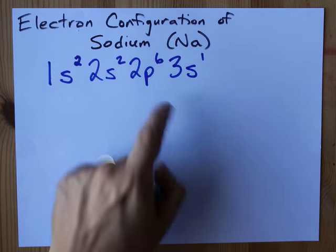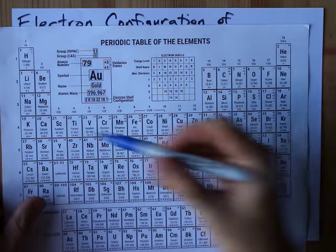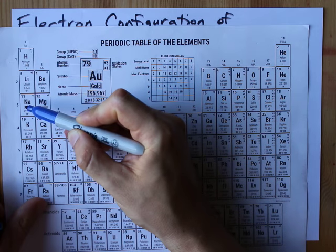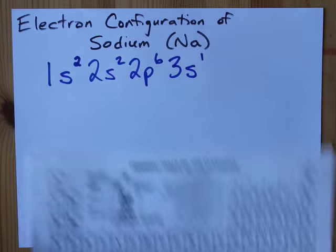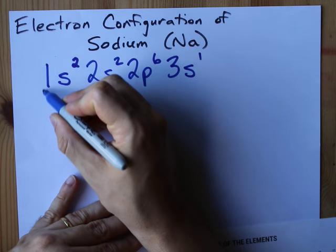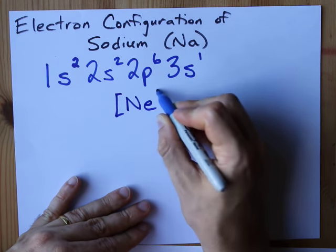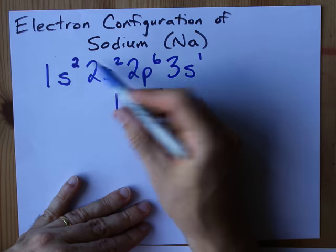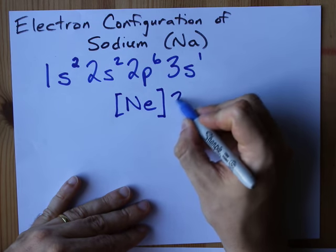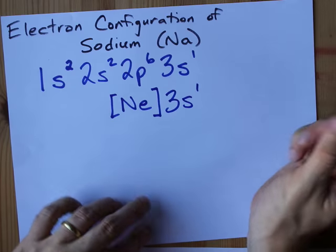Some teachers are going to want you to use shorthand. Please note that the noble gas ahead of sodium is neon. So you can cut off 1s22s22p6, which takes you all the way up to the noble gas neon, replace it with Ne in square brackets, and then simply continue and write 3s1.